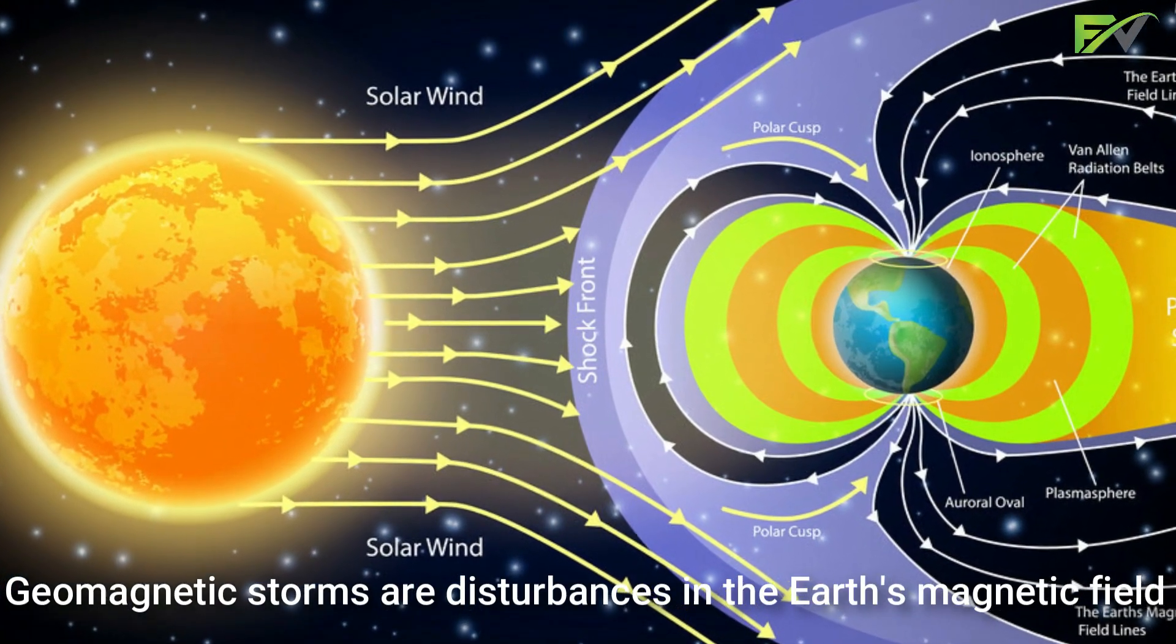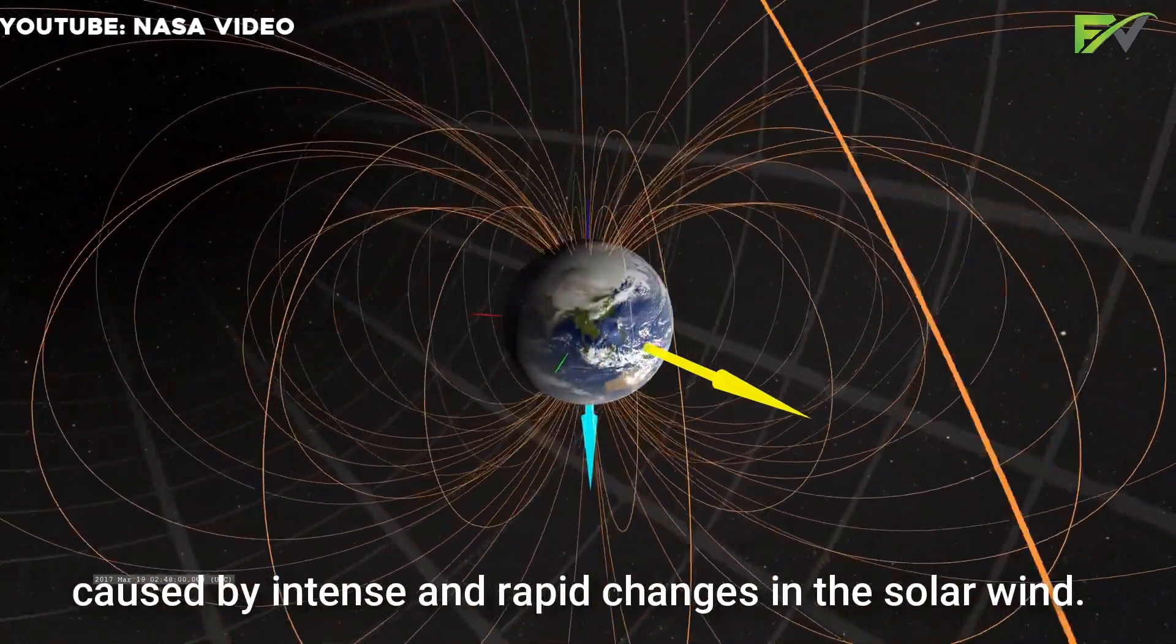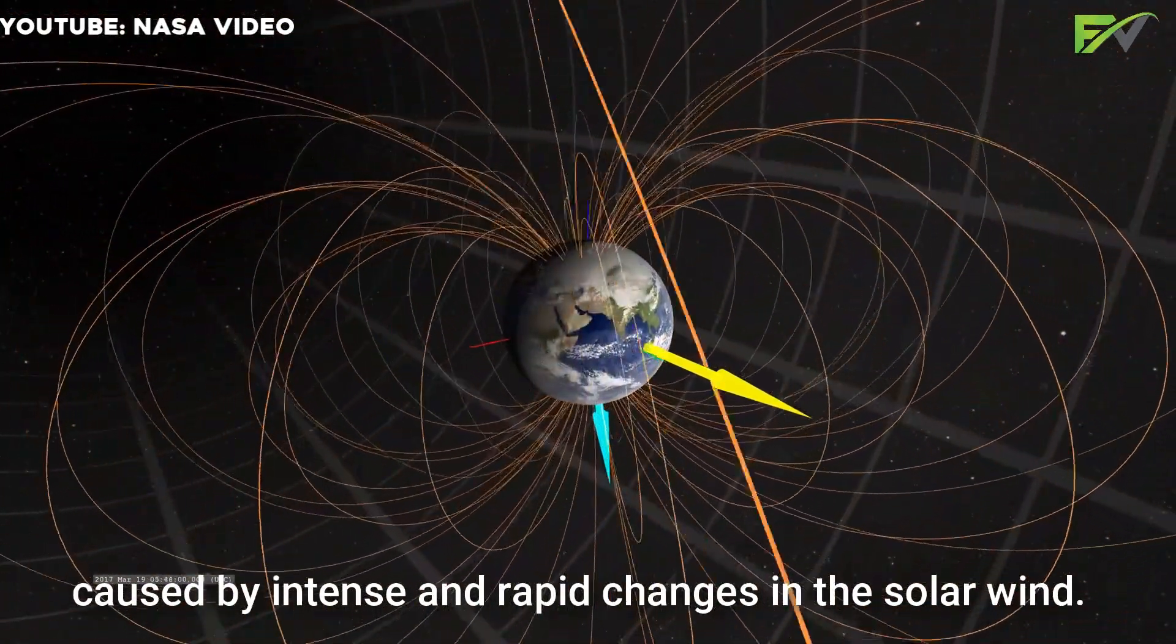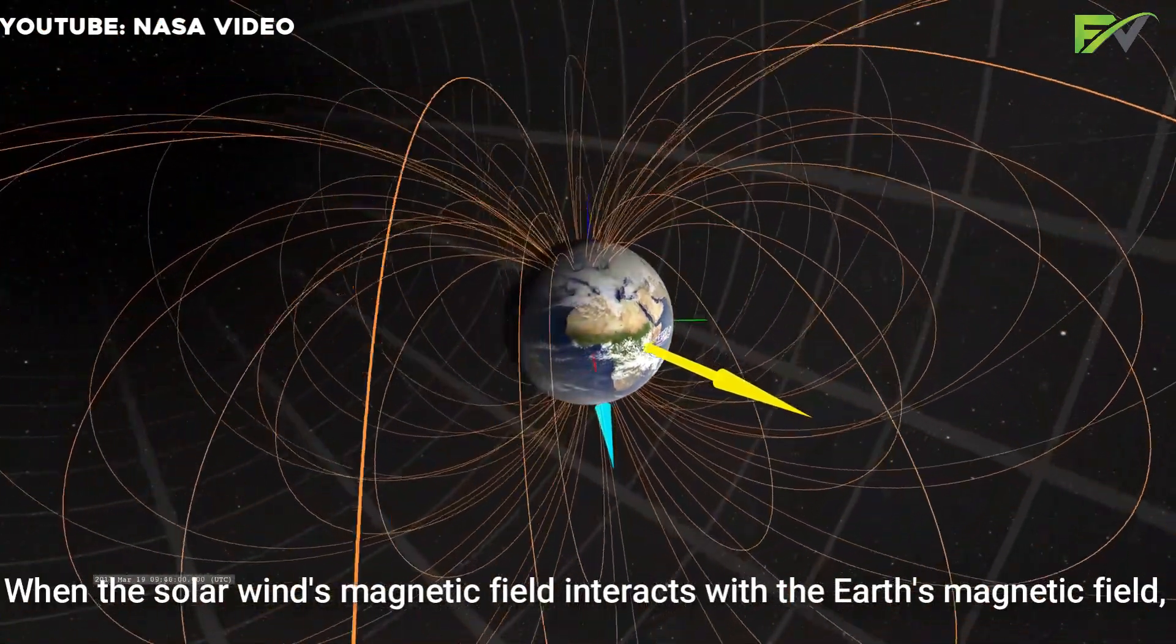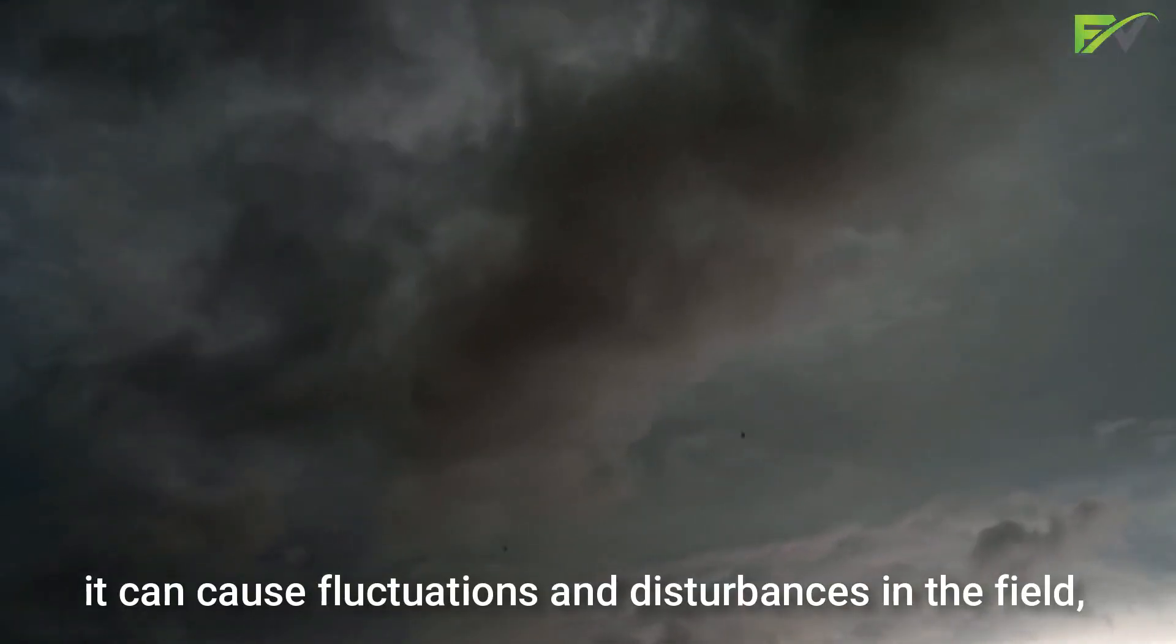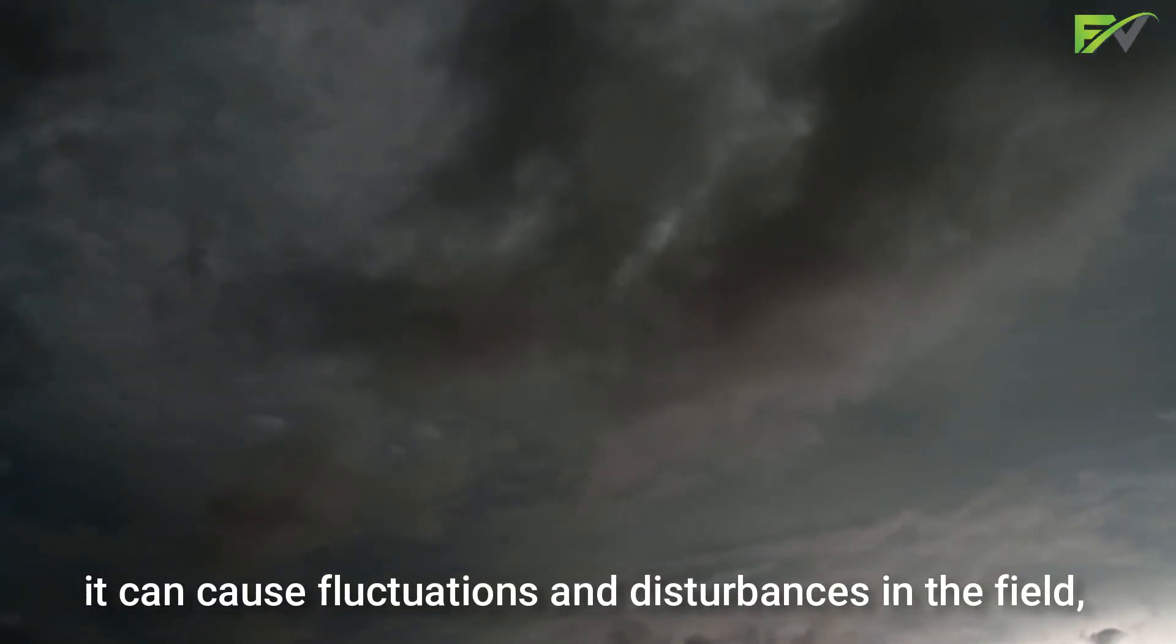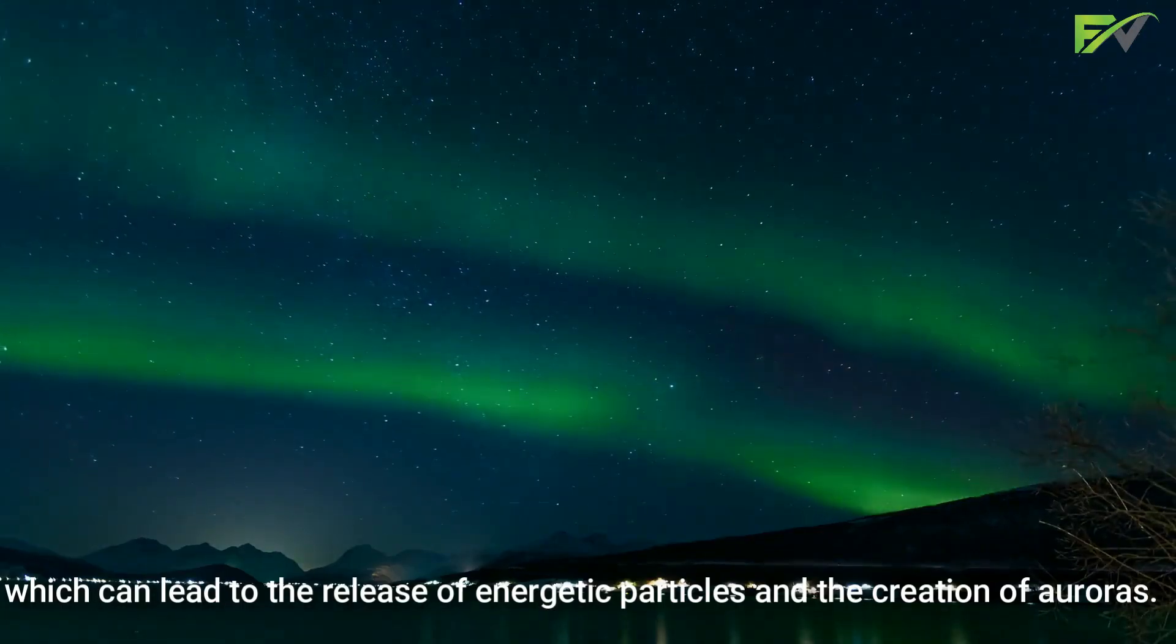Geomagnetic storms are disturbances in the Earth's magnetic field caused by intense and rapid changes in the solar wind. When the solar wind's magnetic field interacts with the Earth's magnetic field, it can cause fluctuations and disturbances in the field, which can lead to the release of energetic particles and the creation of auroras.